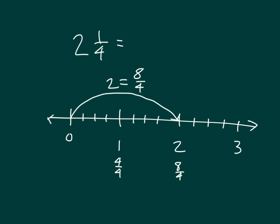And then, so, for 2 and 1 fourth, I just need to go 1 more fourth there. So, I have 8 fourths and 1 fourths, which equals 9 fourths. Read the whole number sentence with me. 2 and 1 fourth is equal to 9 fourths.